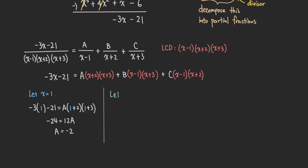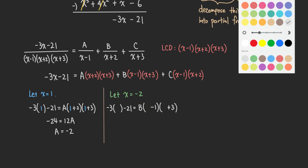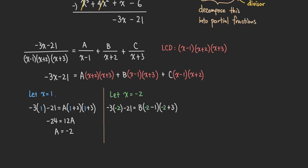Next, let x equal negative 2. That term and the C term go away because of the x plus 2 factor. So we get negative 3 times negative 2 minus 21 equals B times negative 2 minus 1 times negative 2 plus 3. That gives positive 6 minus 21, which is negative 15, equals negative 3 times 1, so negative 3B. Therefore B equals 5.